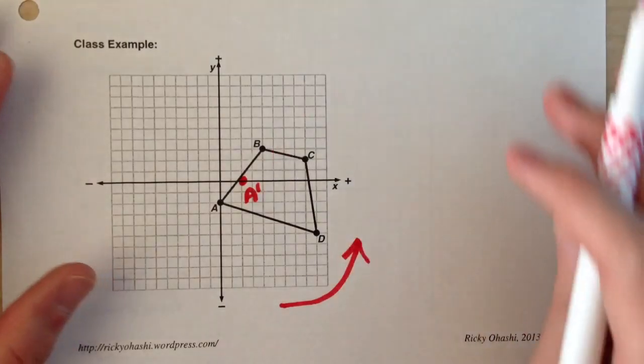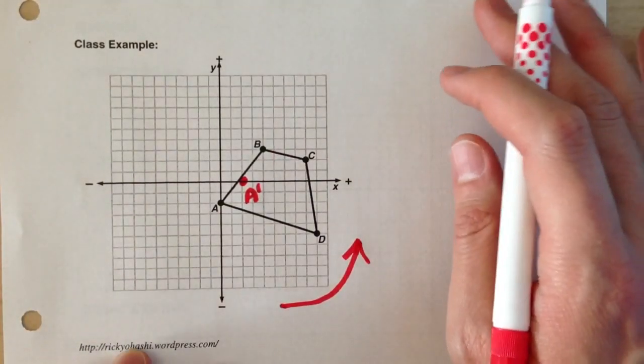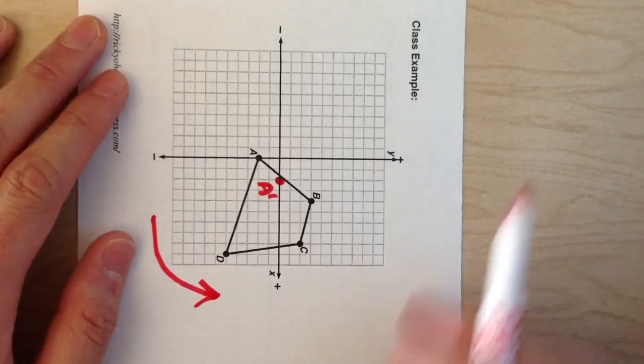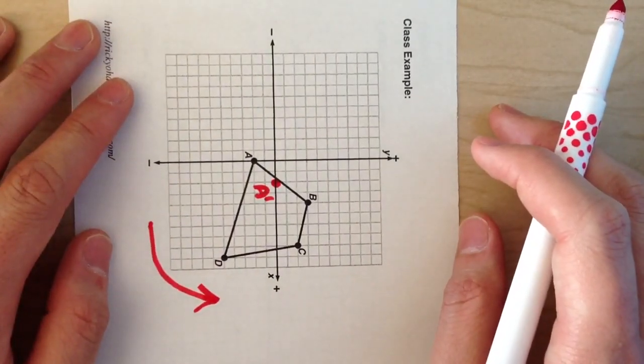To figure out where B prime is going to go, what I do is I take my coordinate grid and rotate it, and then follow that exact same pathway that I had before.